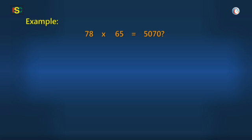Okay then, the digit sum of 78 is 7 plus 2 plus 6, that is 6. And the digit sum of 65 is 6 plus 3 plus 2, that is 2. So the combined digit sum will be 6 into 2, that is 12, or simply 3.